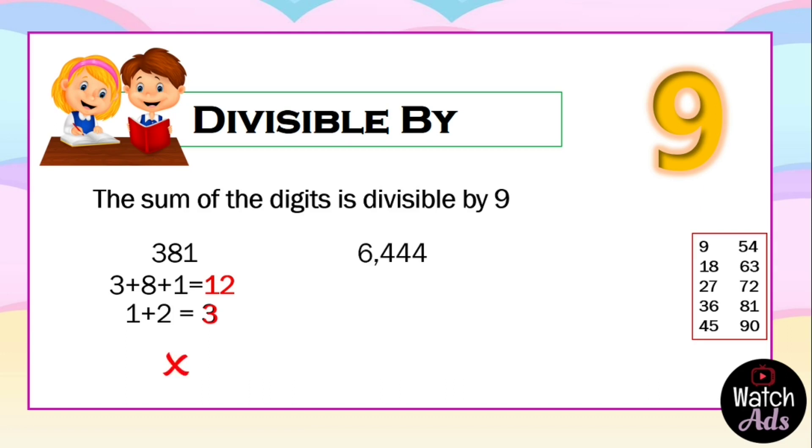Let's have another example: 6444. We add the digits; the answer is 18. We know that 18 is divisible by 9 if we have memorized the multiplication table, but we can still proceed: 1 + 8 = 9, and 9 certainly is divisible by 9, which means 6444 is divisible by 9.